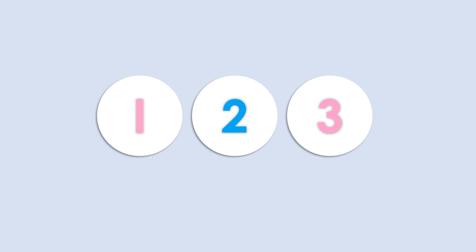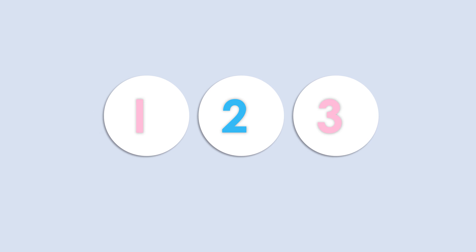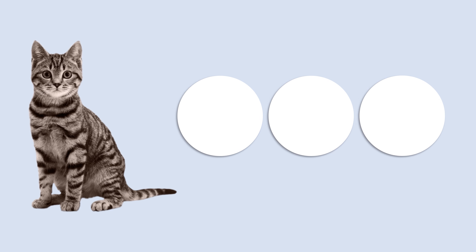Let's see what the first word we have to build. Who is this? Yes, a cat. So we are going to build the word cat. Now tell me, what's the first sound that you hear when I say cat? Cat, cat. What's the first sound? Yes, k sound.